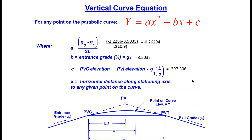So our equation now is y = -0.26294x² + 3.5035x + 1297.306. That's our parabolic equation that we've created.